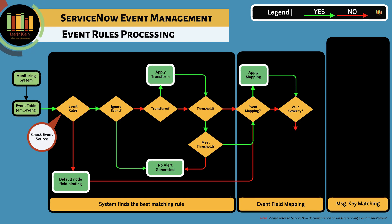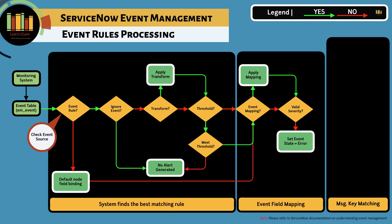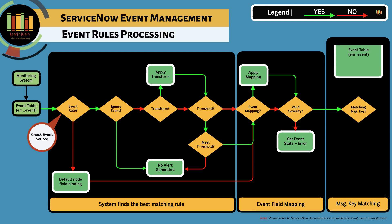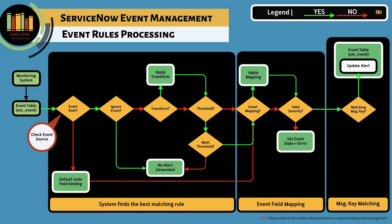Note: if there is no severity defined at this point, the state of the event is set to error and alert generation does not occur. As a final step before alert generation, the system searches for any matching message key. If a matching message key exists, it updates the existing alert and the event will be associated to the alert. A new alert is created if there is no matching message key.